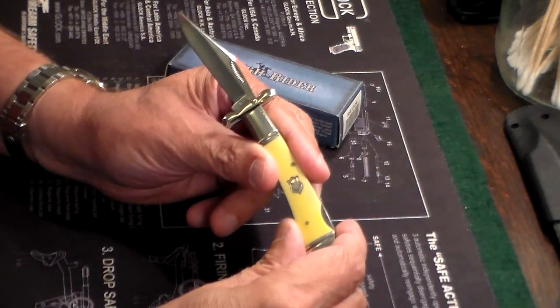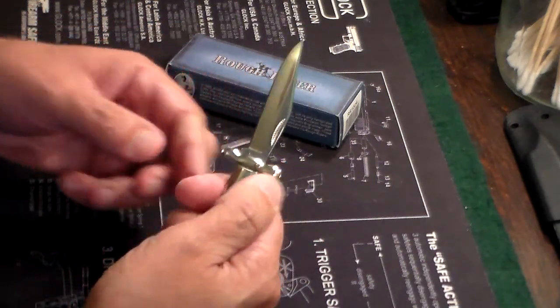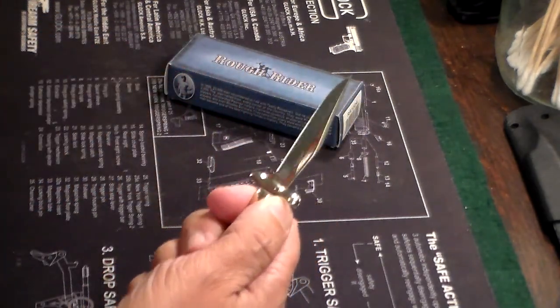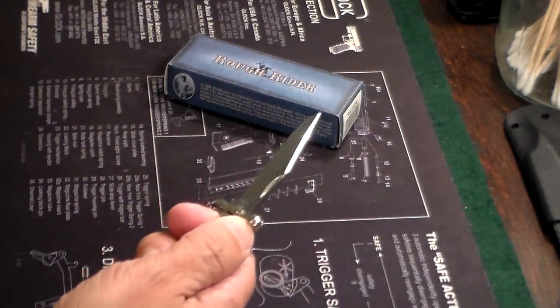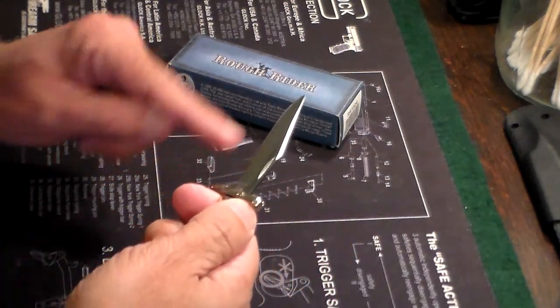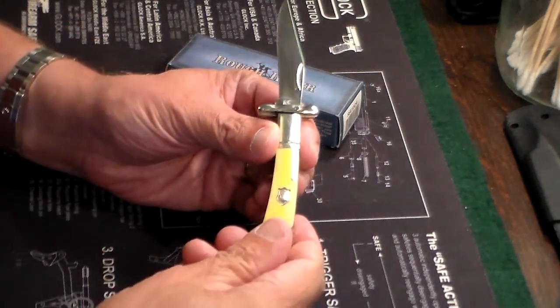The reason they call it a swing guard is because it has these little guards that basically pop up. I guess if you were using this knife for any kind of task, it prevents your forefinger from sliding forward on the blade and cutting yourself. Not really what I'd call a self-defense knife, but it is kind of sturdy.